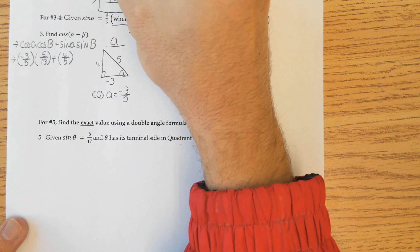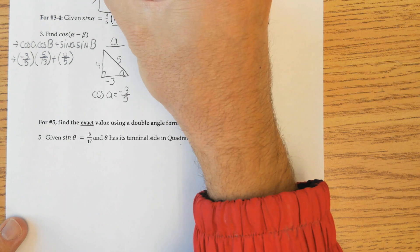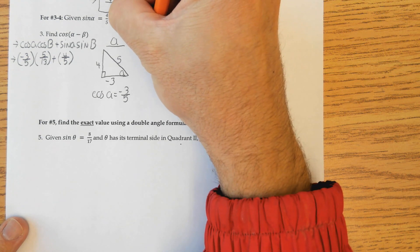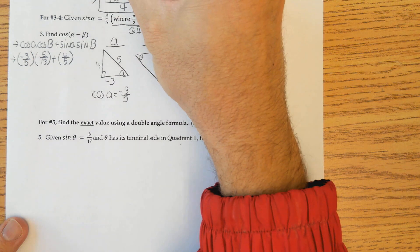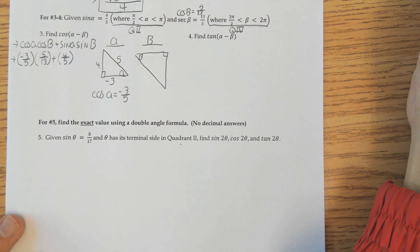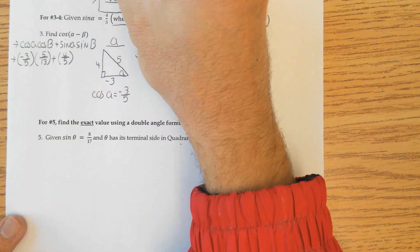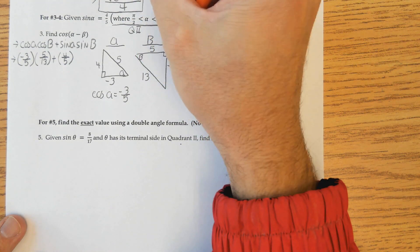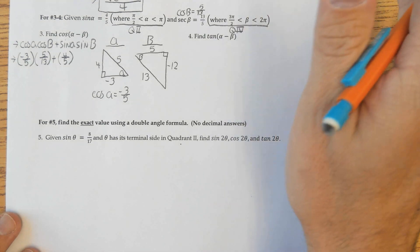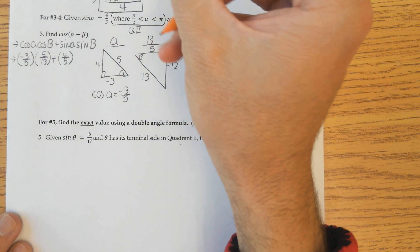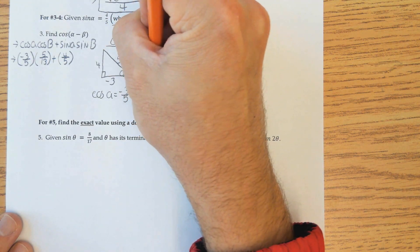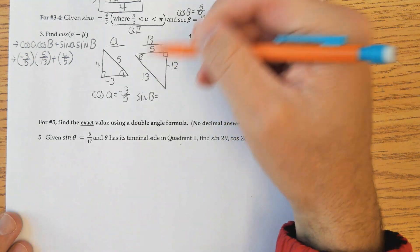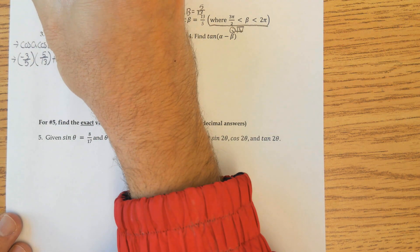Now I need to draw the triangle for big B, which is in quadrant 4 — go right and then down. Cosine equals adjacent over hypotenuse, so that's 5 over 13. This is a Pythagorean triple — the opposite side is negative 12 because you went down. Please make sure you get your signs correct; if you mess up your signs it'll mess up the whole problem. So sine of big B equals opposite over hypotenuse, which is negative 12 over 13.